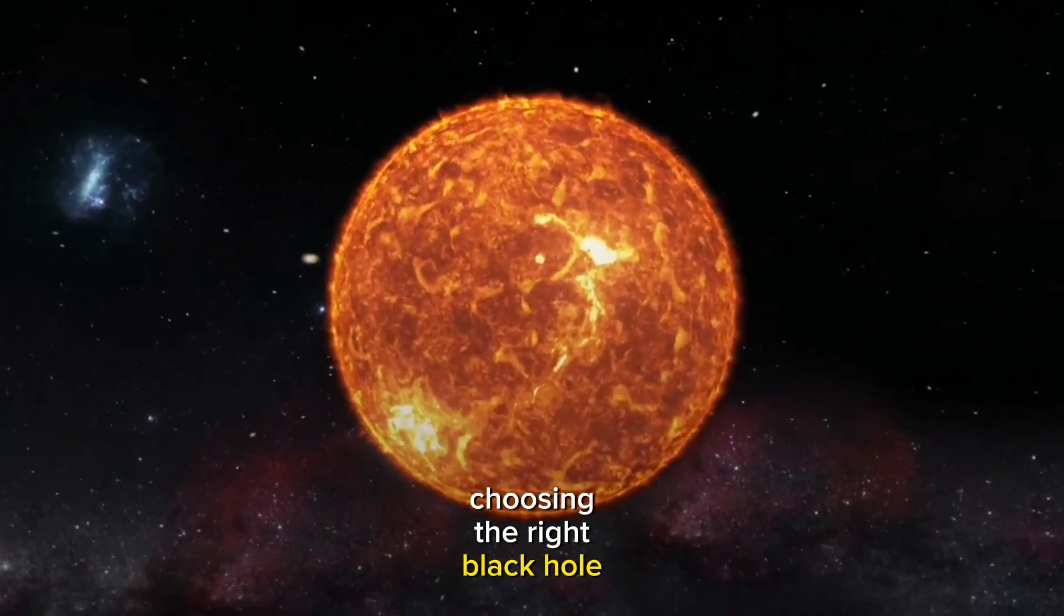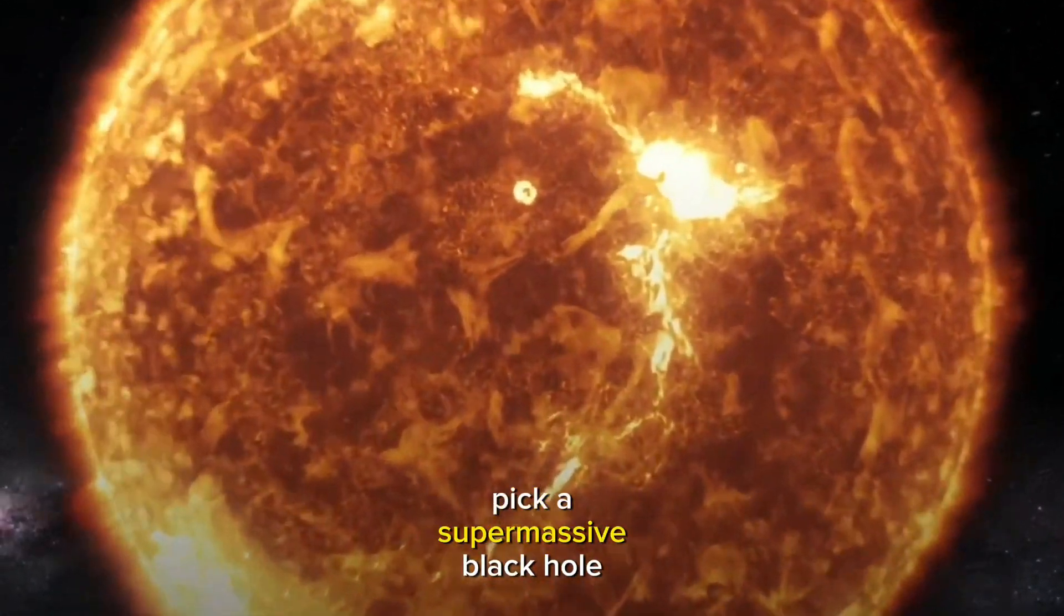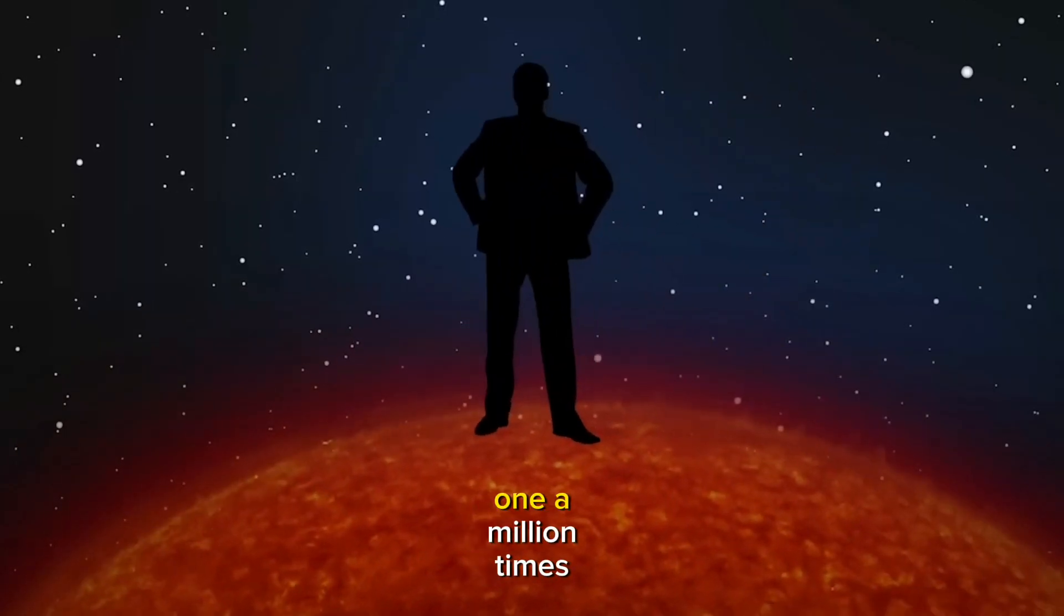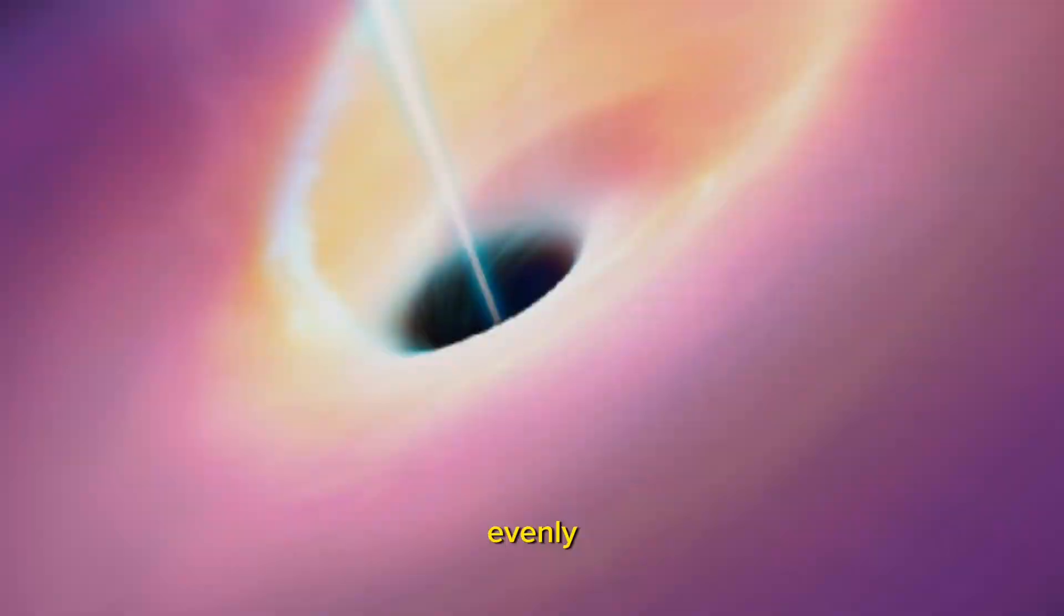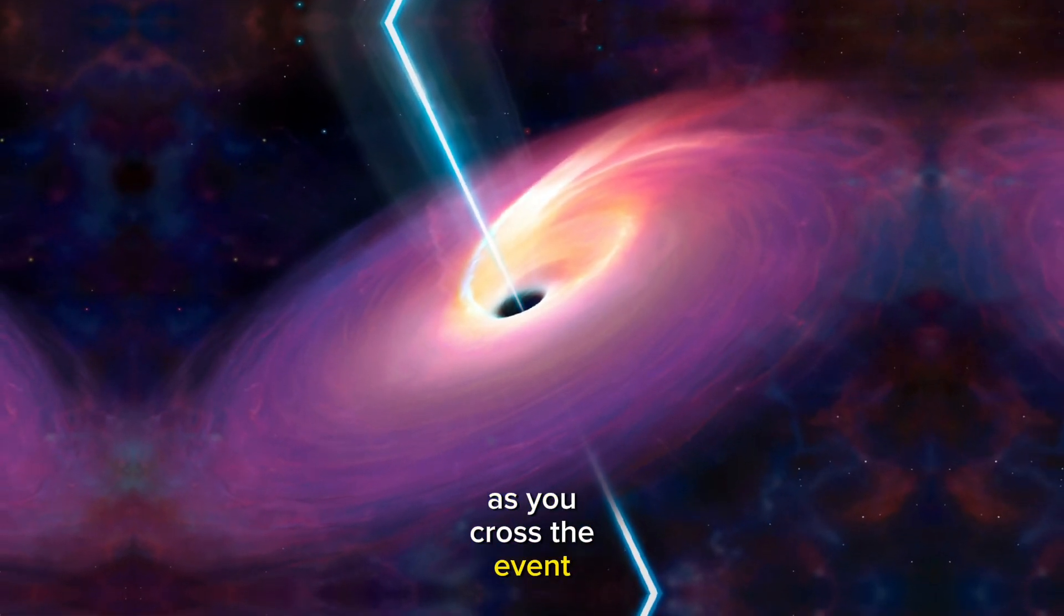Choosing the right black hole. For a safer fall, pick a supermassive black hole, one a million times heavier than our sun. That way, you'd be pulled evenly, sparing your body as you cross the event horizon.